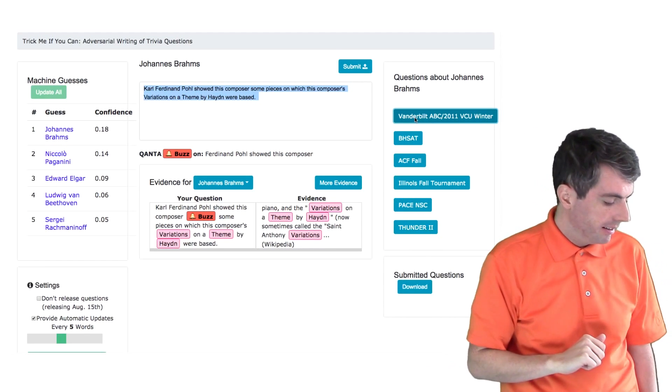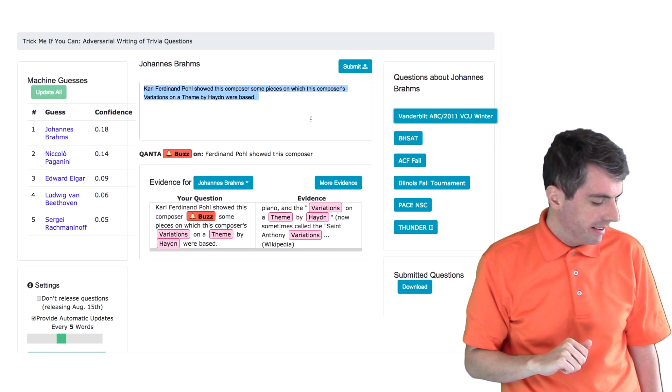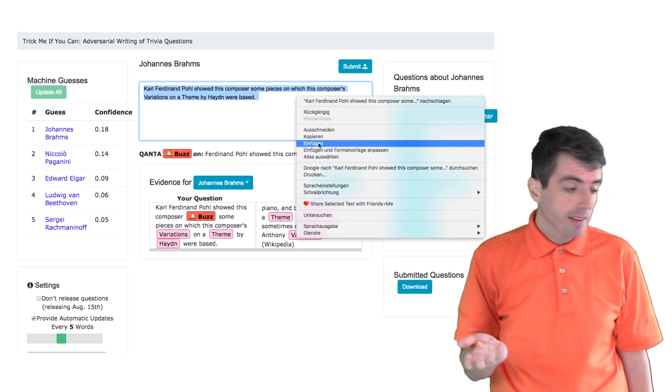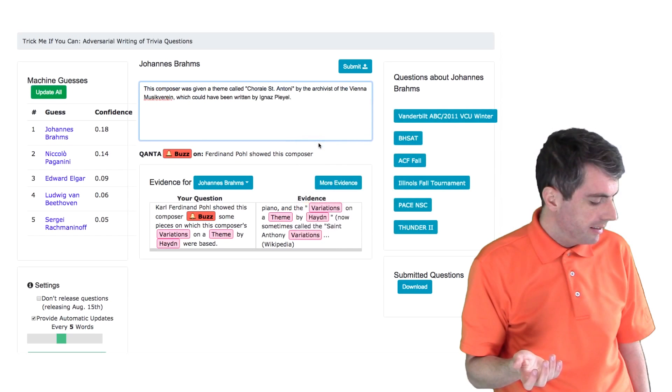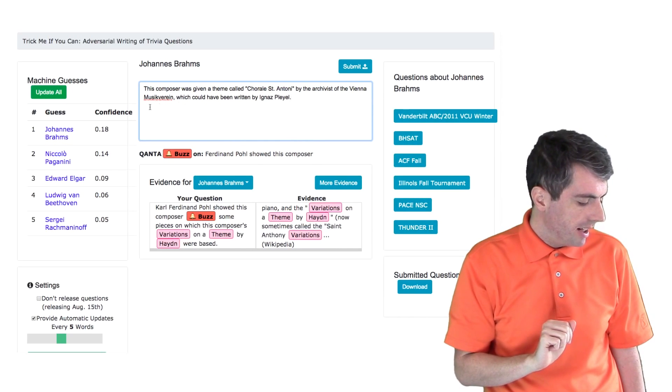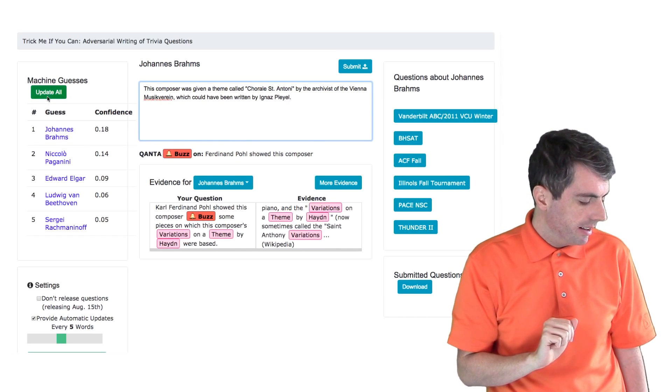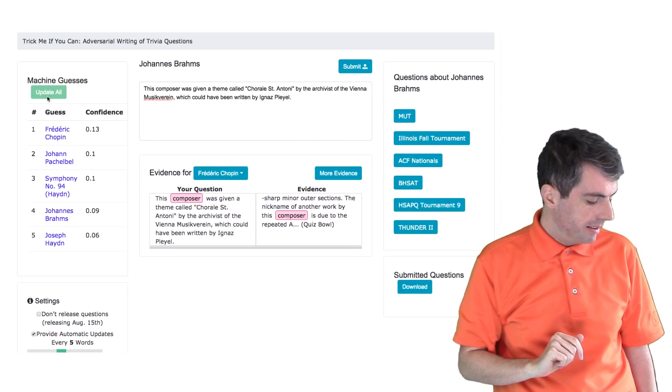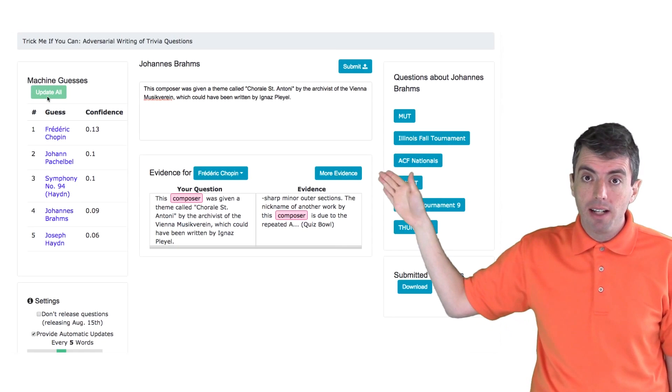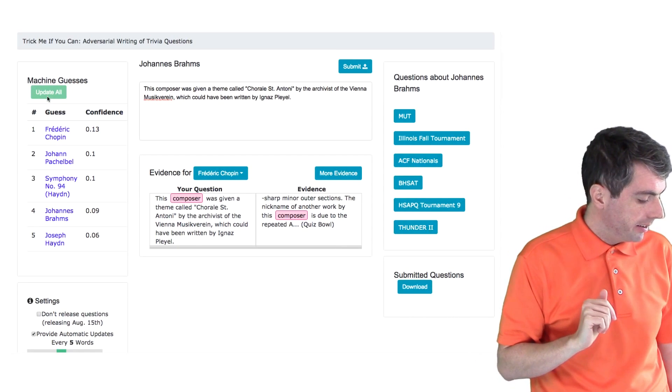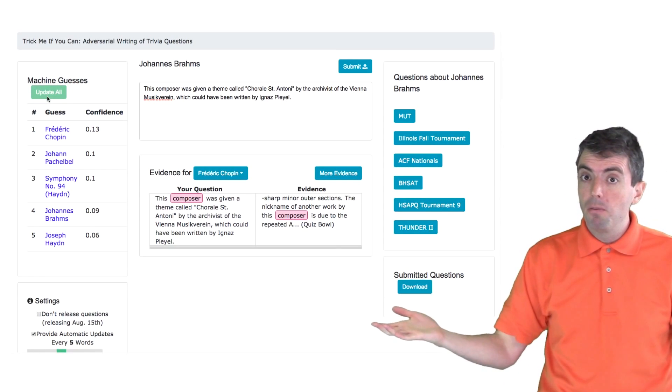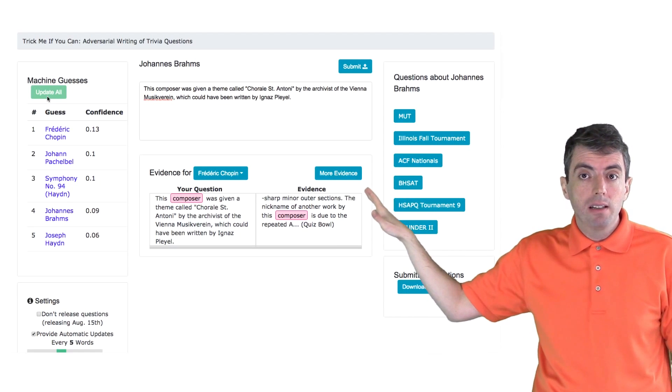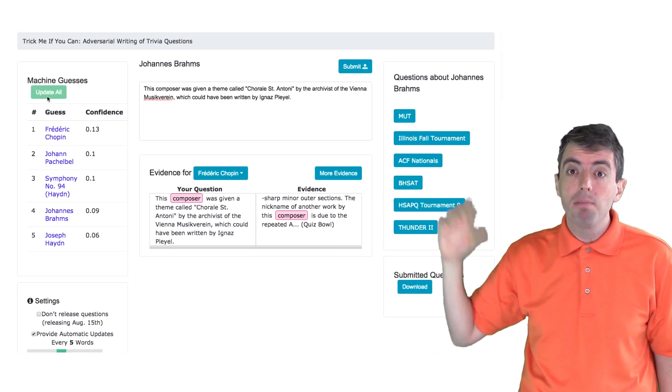And down below you can see which specific words are triggering the system to answer your question with Johannes Brahms or whatever the top guess is. So let's try to fix that. And I'm not going to change the clue very much, I'm just going to rephrase it slightly. The question changes, and I can click on Update All over here to see what the computer is thinking now. So now the system doesn't know that this is Johannes Brahms. It thinks that it's Friedrich Chopin. So we've managed to create a clue that basically has the same information but is challenging for the computer to answer because it needs to basically make a logical inference.